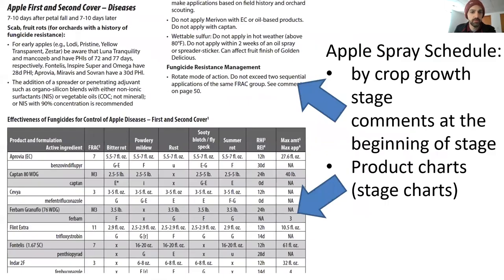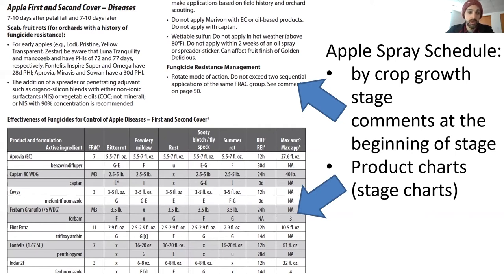This is what the crop stage tables look like, and you're going to notice they look quite a bit different. We now have all of our products down the left-hand side and our pests across the top of the table. Within the table, you'll see product, formulation, and active ingredient. If a product is a restricted use product, it'll be labeled RUP next to the product name. We've included the FRAC information, and within each pest we've indicated the application rate and efficacy. On the far right side, you'll see the REI and PHI, as well as the max amount and max applications if known.